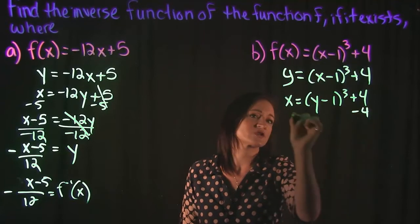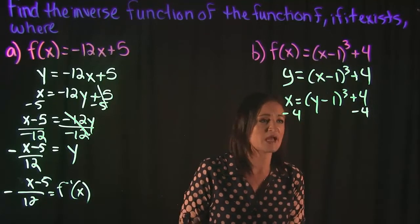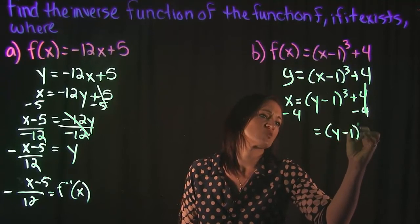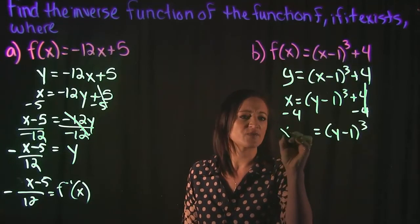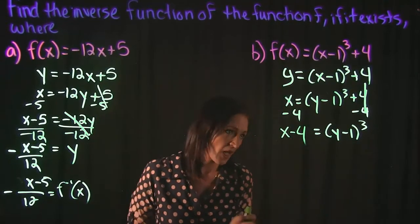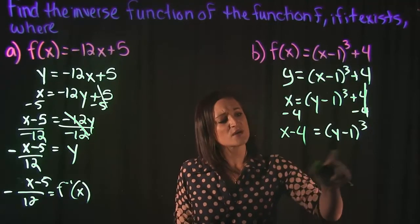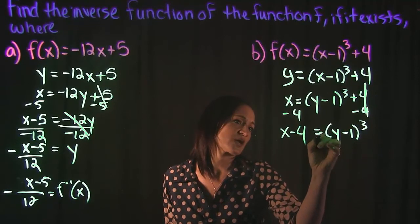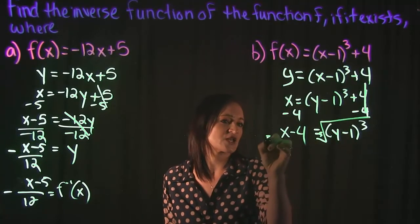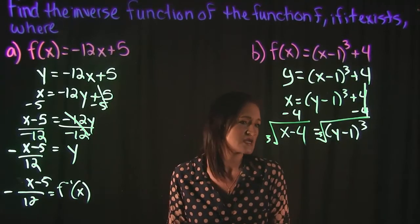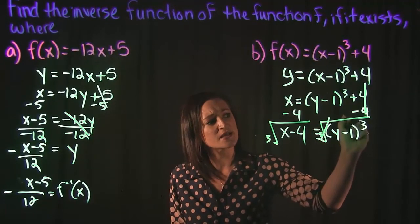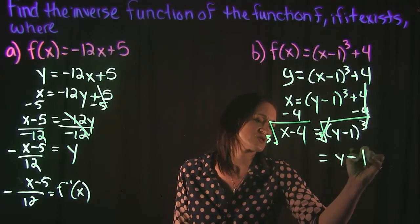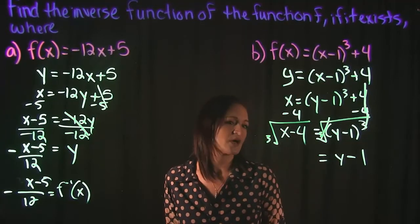To solve for y, I first need to move the 4 to the other side by subtracting it from both sides — it cancels on the right, leaving y minus 1 cubed, and on the left we have x minus 4. To get rid of the third power, we take the cube root of both sides, since a cube root and a third power are opposites and cancel each other.